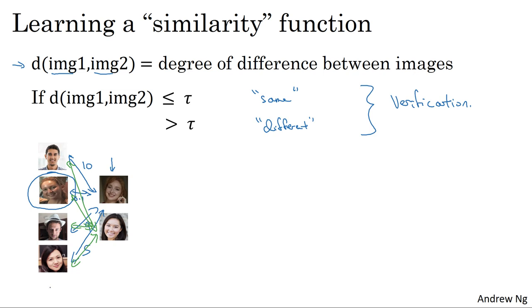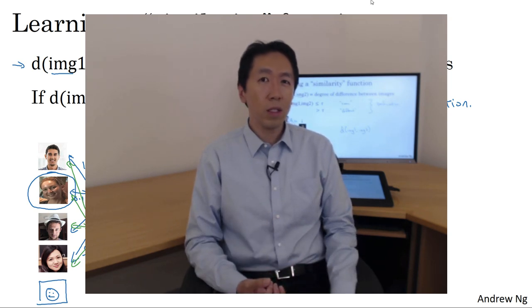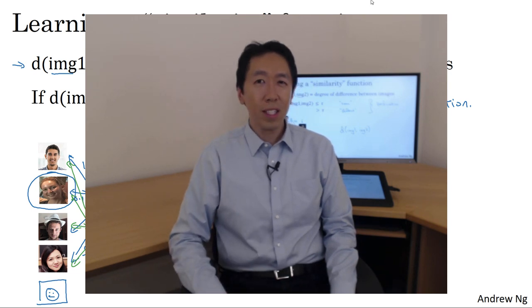Notice how this allows you to solve the one-shot learning problem. So long as you can learn this function D, which inputs a pair of images and tells you basically if they're the same person or different persons, then if you have someone new join your team, you can add a fifth person to your database and it just works fine. So you've seen how learning this function D, which inputs two images, allows you to address the one-shot learning problem. In the next video, let's take a look at how you can actually train the neural network to learn this function D.